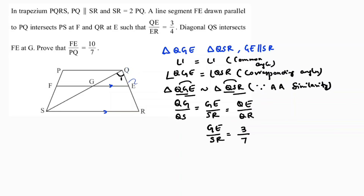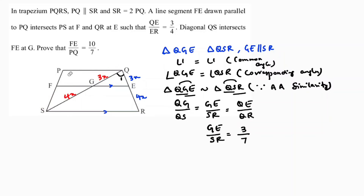It is clearly given that QE and ER are in the ratio 3x to 4x, so total QR is 7x, meaning QE by QR equals 3 by 7. By the same ratio, QG is 3x and QS is 7x, so GS is 4x. Therefore GE equals 3 by 7 times SR. This is equation 1.